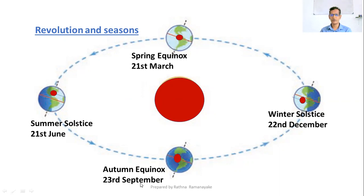On September 23rd, the Sun is overhead over the equator. Then on 22nd December, the Sun is overhead over the tropics, and it is known as Winter Solstice.